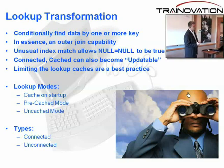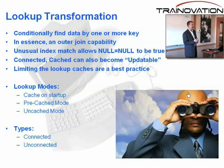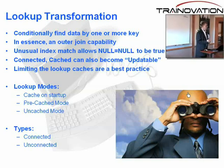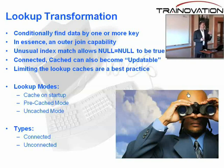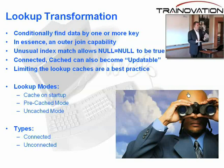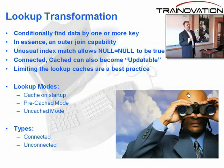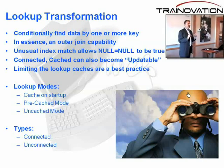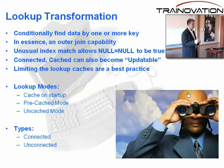There's a special way that that works. And of course, it works with data and index caching. We're going to talk about the caching in another section of this training. So in essence, it's an outer join capacity — an unusual index match. This is the one place in Informatica that you can actually have null equal null be true.